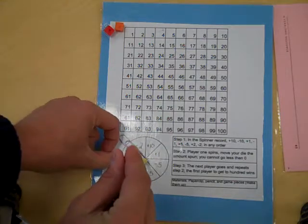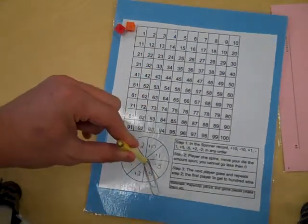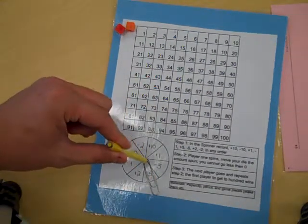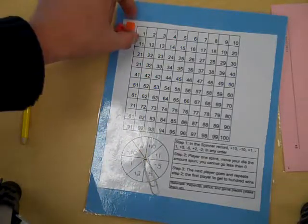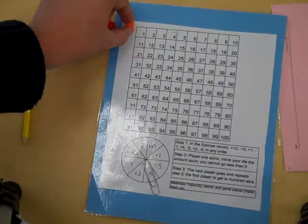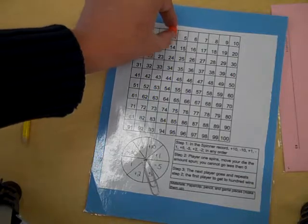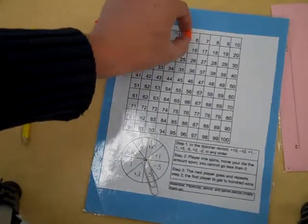Now the nice thing about these is that all you do is flick and whatever it lands on, so in this case it landed on plus 5, you would then take your marker and move 5. Now some kids may go 1, 2, 3, 4, 5. Some may say, oh there's 5.